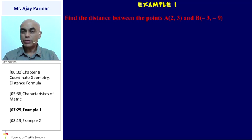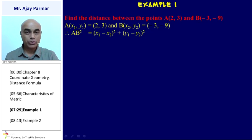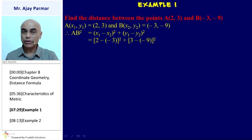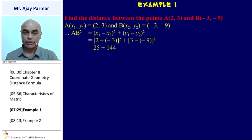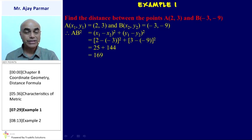Example: Find the distance between A(2, 3) and B(−3, −9). AB² = (2 − (−3))² + (3 − (−9))² = 5² + 12² = 25 + 144 = 169. Therefore AB = 13.